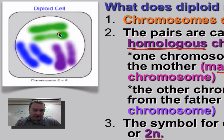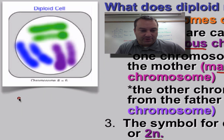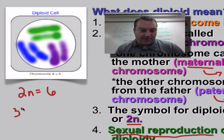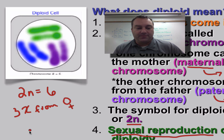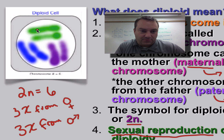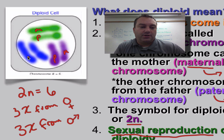Looking at this picture, we have one, two, three, four, five, six chromosomes. So for this organism, 2n equals six — the diploid number is six. That means you got three chromosomes from mom and three chromosomes from dad. This one here is maternal, this green one would be paternal, and we alternate maternal and paternal.